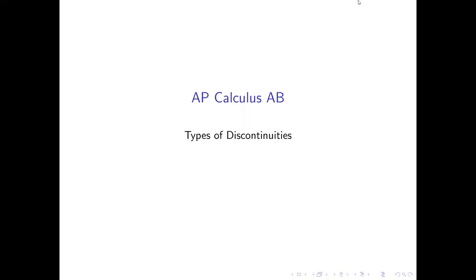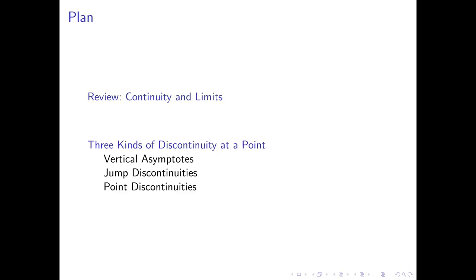Now that we know something about how to define continuity in terms of limits, we'll take a look at the different ways in which a function can be discontinuous and how we can recognize that from its limit behavior. We'll begin with a quick review of continuity and limits, and then we'll look at three different types of discontinuity at a point: vertical asymptotes, jump discontinuities, and point discontinuities.